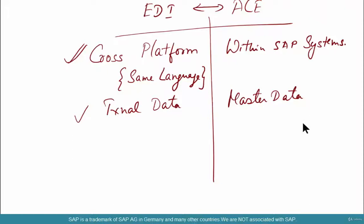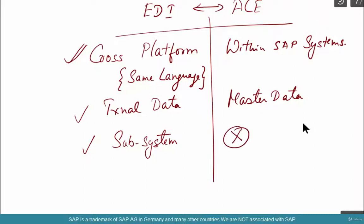Another difference is that to do EDI, you need a subsystem that understands EDI. To do ALE, you don't need a subsystem. SAP can directly interact with another SAP system without the need for a subsystem — there is no need for translation because the target system is SAP as well.